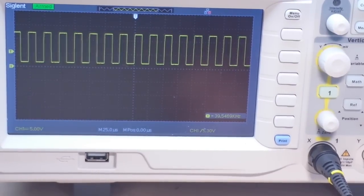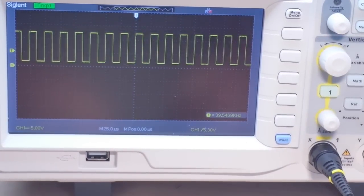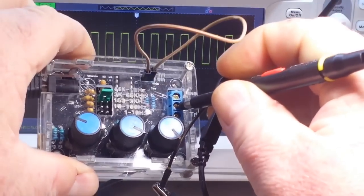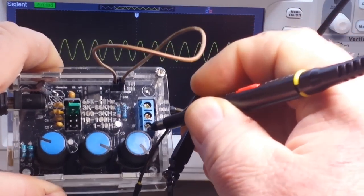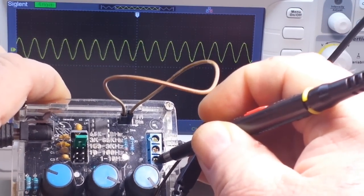Okay, so we're getting a square wave. Now, if I get this all on camera here, if I move down to this output, we get a sine wave.